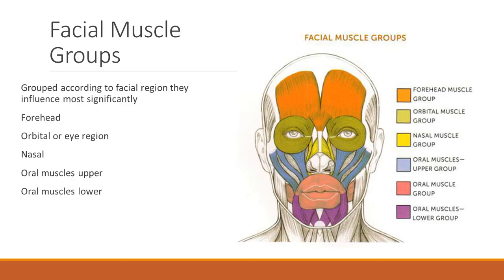Here are some facial muscle groups, color coded. Orange at the top is the forehead muscle group, then the orbital muscle group, nasal, oral muscles in the upper group, the oral muscle group, and oral muscles in the lower group. These groups are organized according to the facial regions they influence most significantly, and we'll look at how each group works together to create expressions.